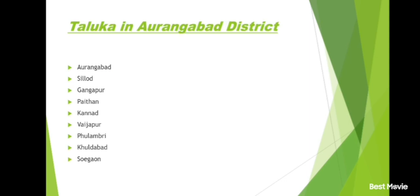Amravati district and its talukas: Amravati, Morshi, Warud, Tiosa, Chandur Railway, Nandgaon, Bhatkuli, Daryapur, Anjangaon, Dharni, Chikhaldara, Achalpur, Chandur Bazar.